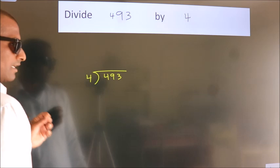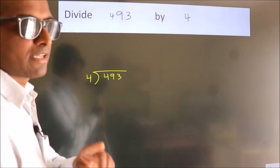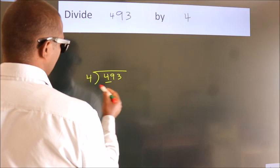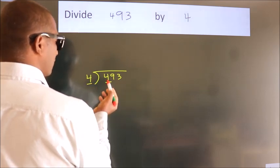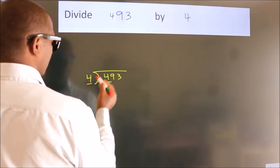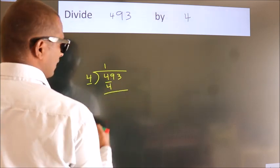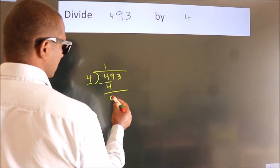This is your step 1. Next, here we have 4, here 4. When do we get 4? In 4 table, 4 once, 4. Now, we should subtract, we get 0.